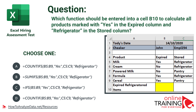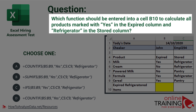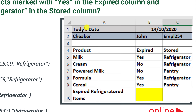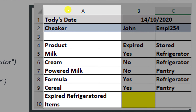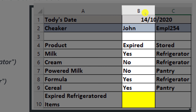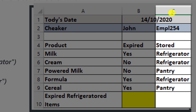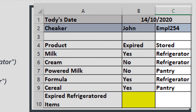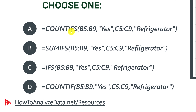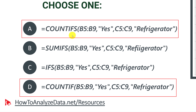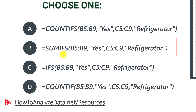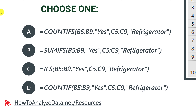Very frequently, you might be asked a formula-related question. For example: which function should be entered in cell B10 to calculate all products marked with YES in the expired column and REFRIGERATOR in the stored column? The data snippet contains three columns: column A has a list of products, column B has values including yes/no and expired, and column C has storage types including refrigerator and pantry. There are four choices: two use COUNTIFS, one uses SUMIFS, and one uses IFS.